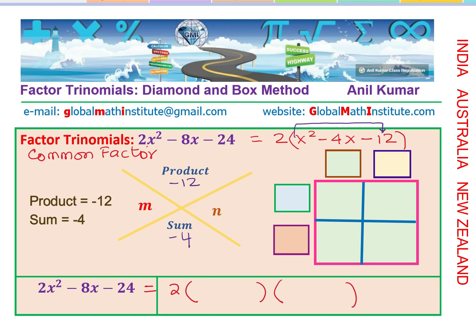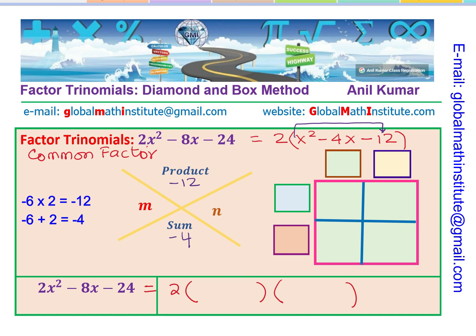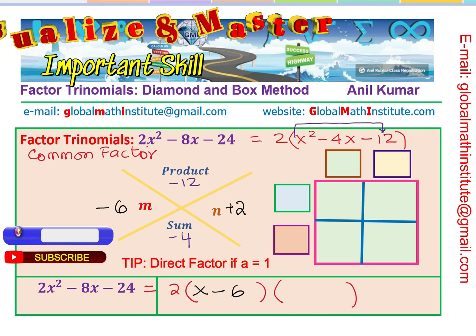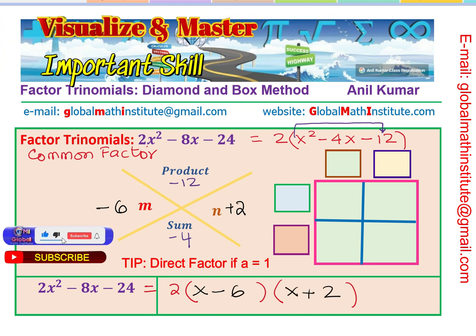We look for two numbers with product −12 and sum −4. For −12, using 6 and 2 with the bigger number negative gives −6 and +2. Their sum is −4 and product is −12. Since the leading coefficient is 1, we can write the answer directly as (x − 6)(x + 2).